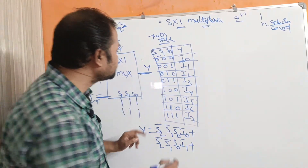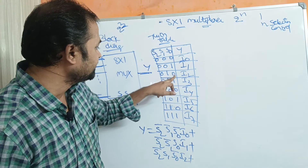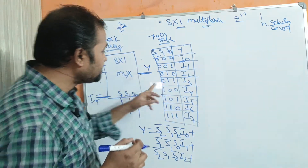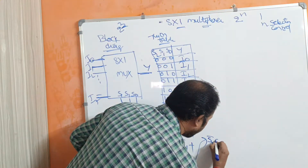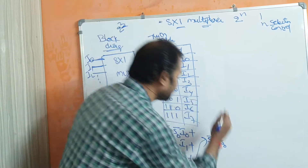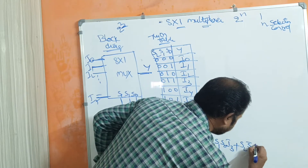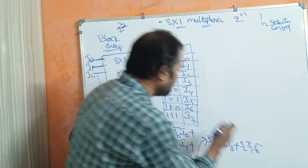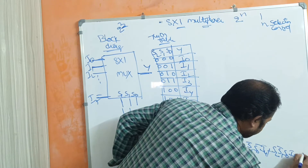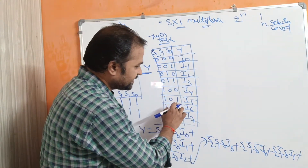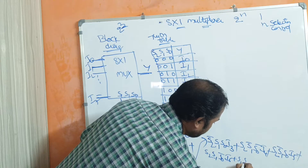Continuing the expression: for 0,1,0 the term is S2_bar · S1 · S0_bar · i2. For 0,1,1 the term is S2_bar · S1 · S0 · i3. For 1,0,0 the term is S2 · S1_bar · S0_bar · i4. For 1,0,1 the term is S2 · S1_bar · S0 · i5. For 1,1,0 the term is S2 · S1 · S0_bar · i6, plus S2 · S1 · S0 · i7.